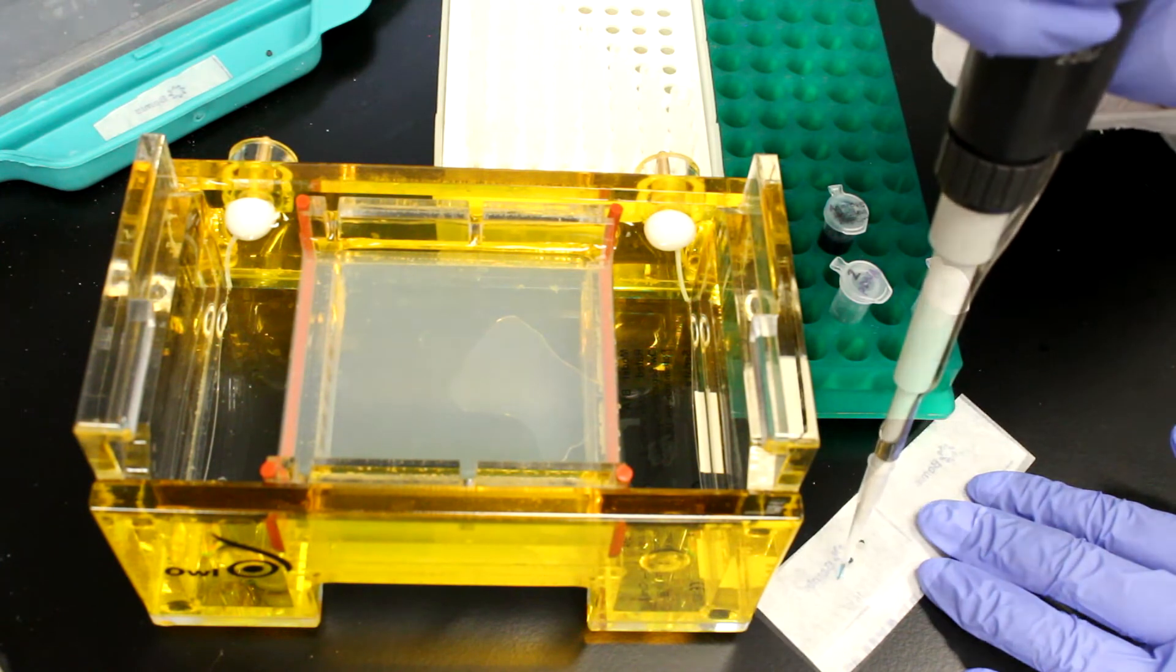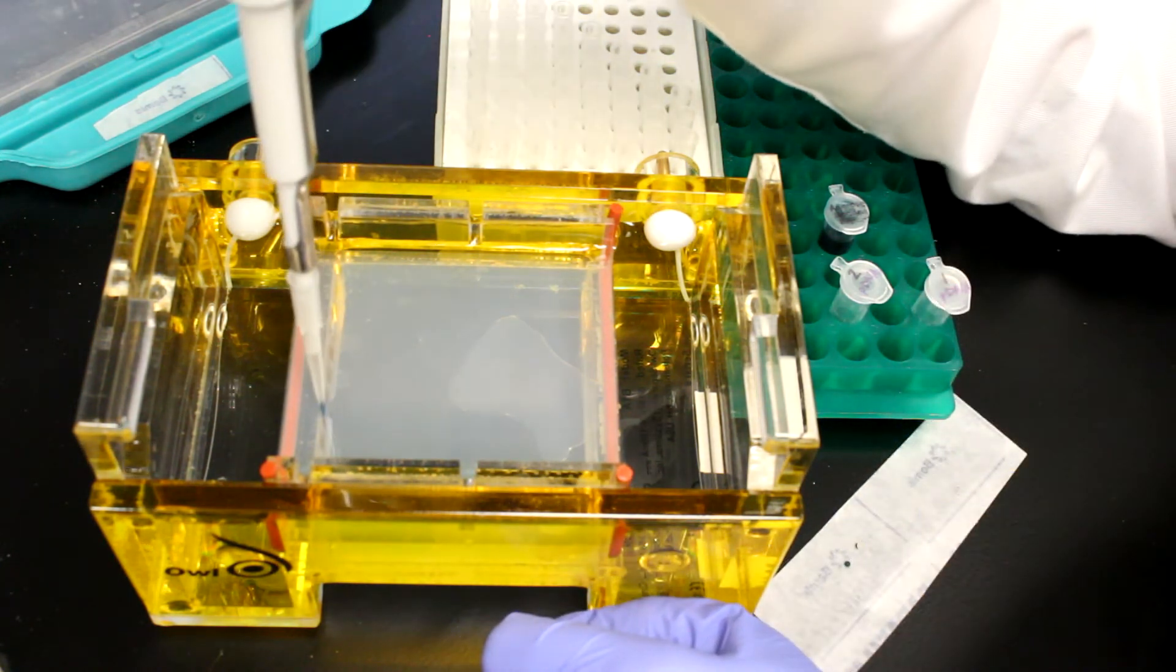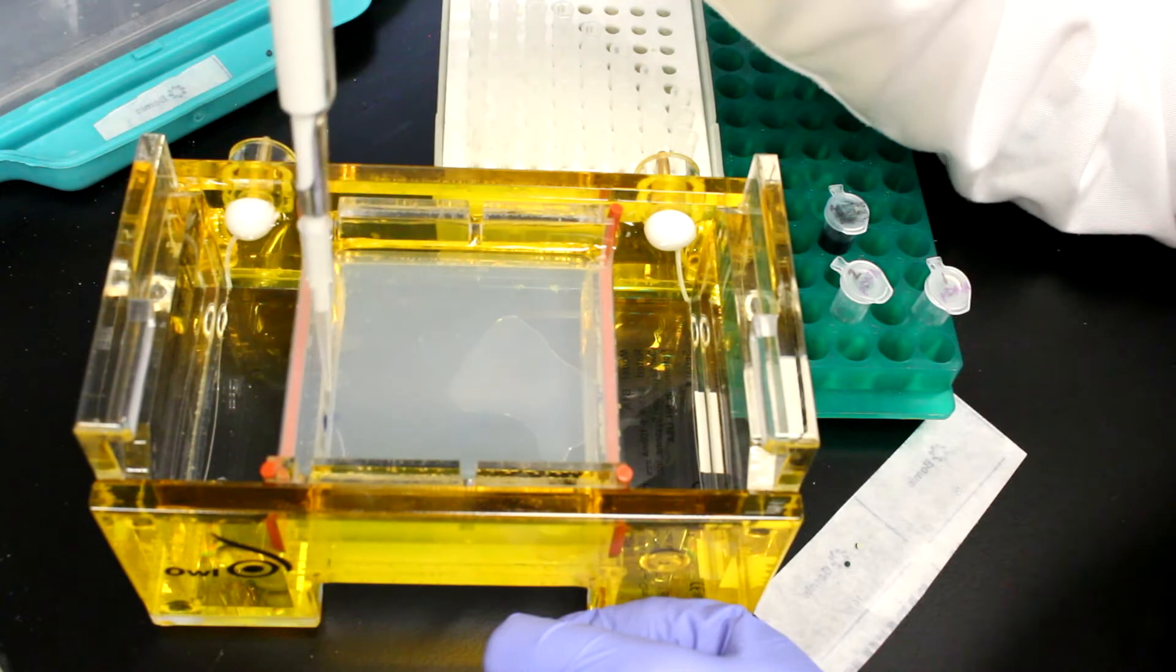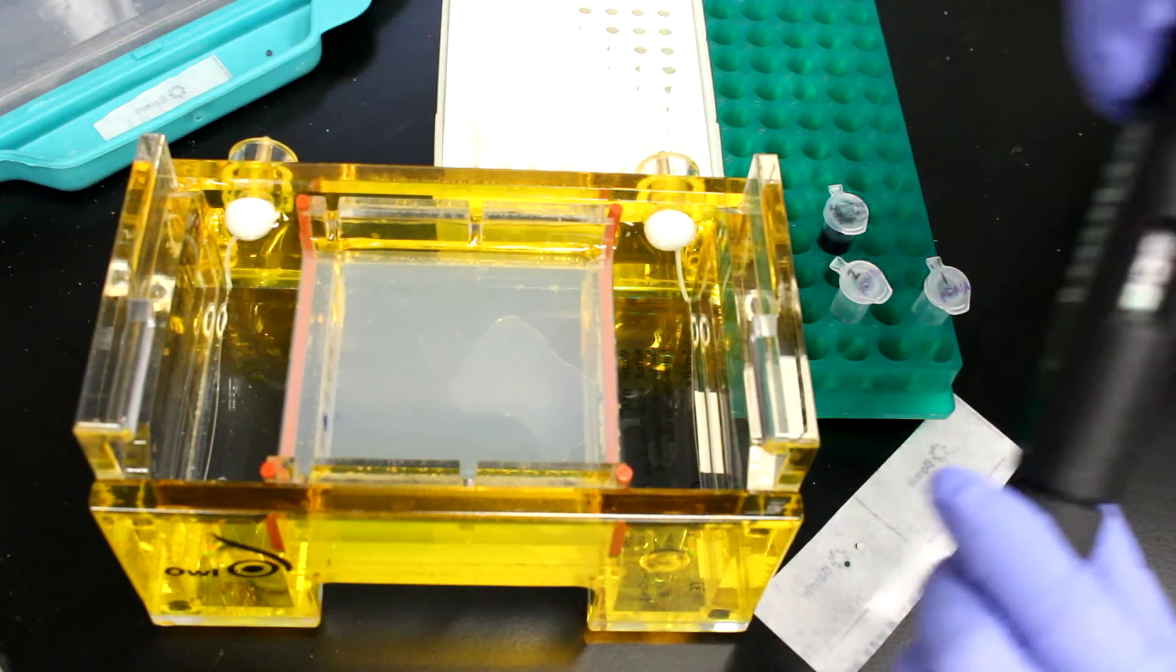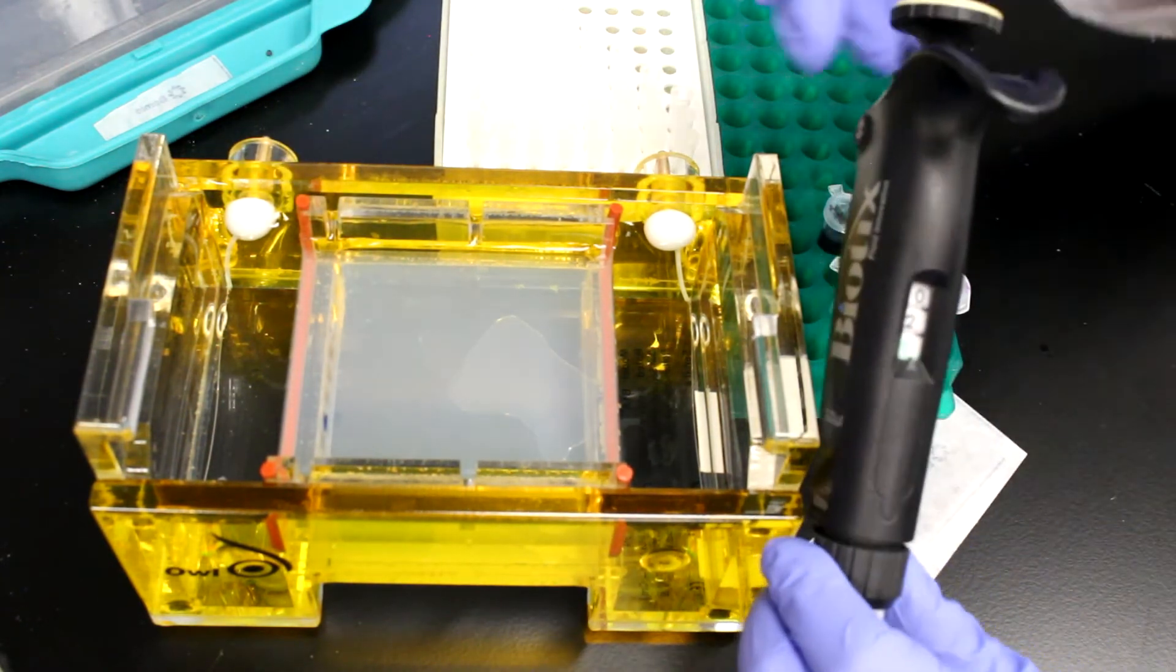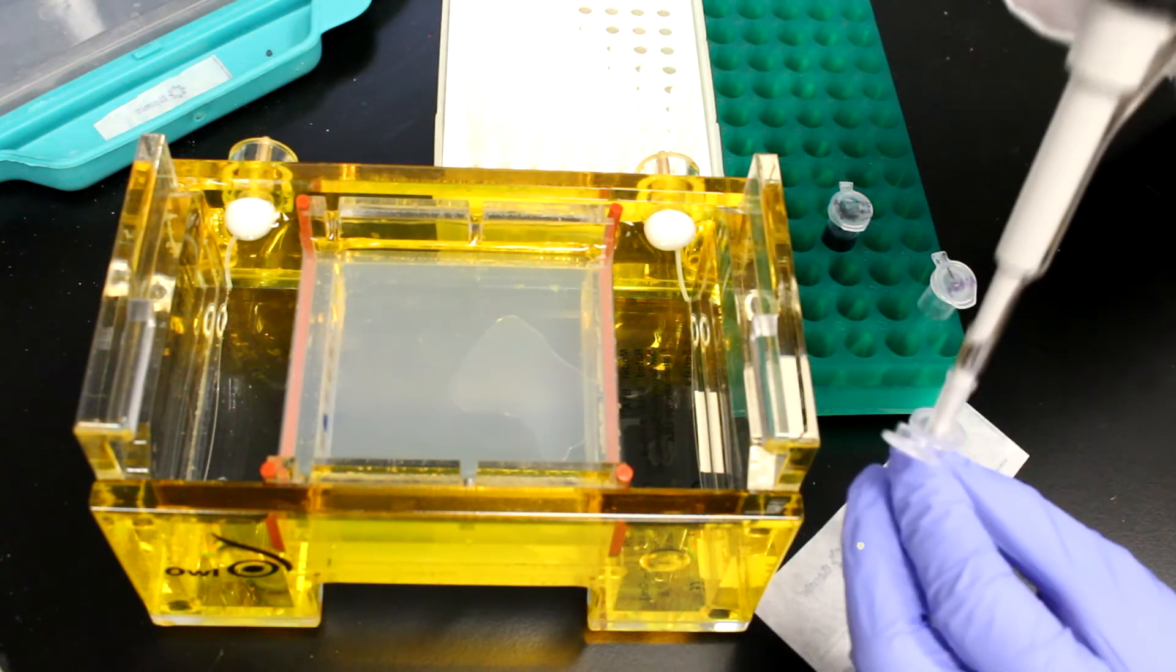The four microliter sample is then added to a well on the agarose gel. This is repeated for the next sample.